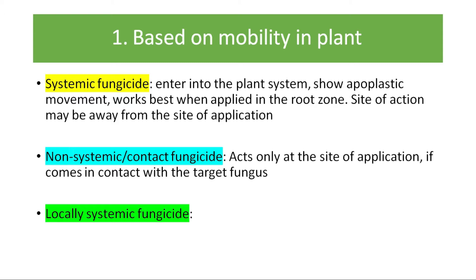For example, for a foliar disease, if a systemic fungicide is applied in the root, the root will absorb the systemic fungicide and the fungicide will enter and translocate into the plant system, be distributed to all plant parts, and find the target fungus in the foliage and kill it. So systemic fungicides enter the plant. One very common systemic fungicide used today is carbendazim or phenomyl.